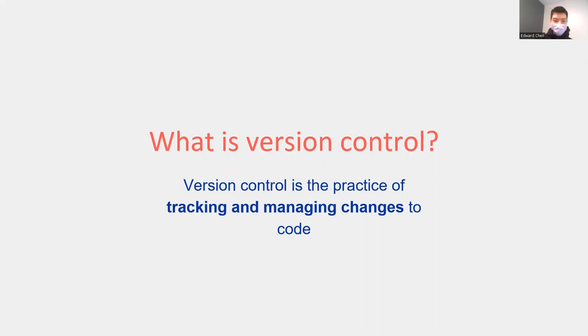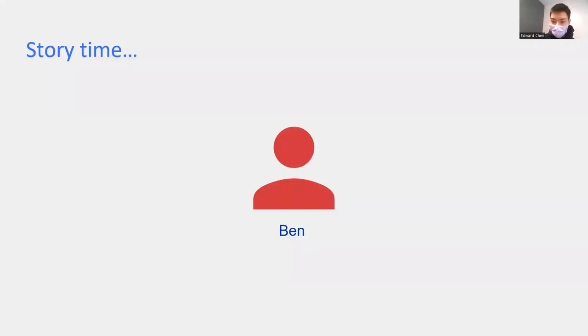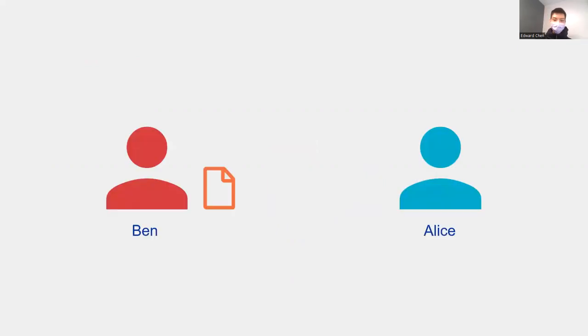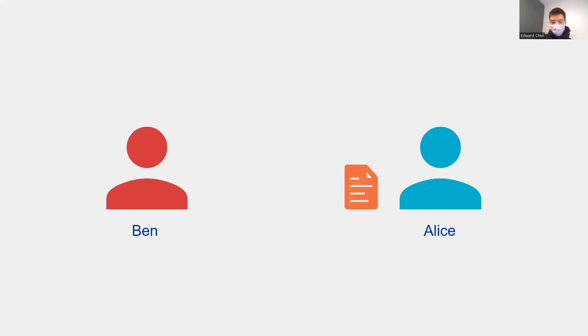Why is that important? Consider the following example. Let's say we have a person called Ben, and Ben is writing some file of some sort. He's working with a classmate called Alice. Alice sees the file, thinks it's nice, and asks Ben to send it to her — probably over email. She reads over it, decides she can make it better, modifies the file, and sends it back to Ben over email.